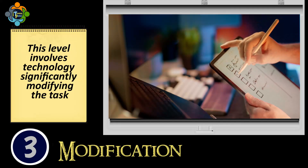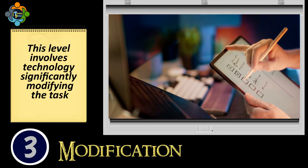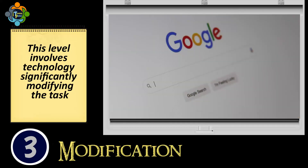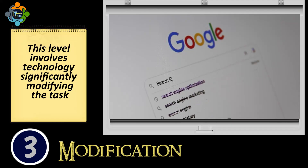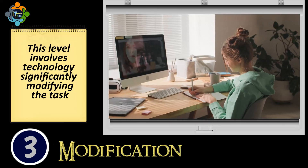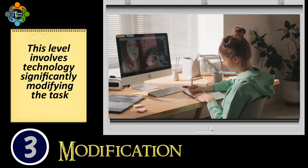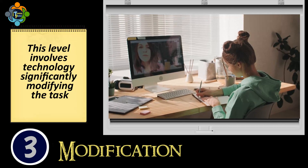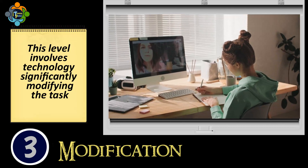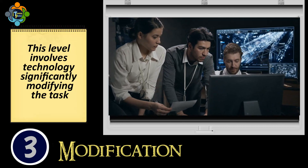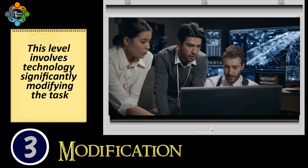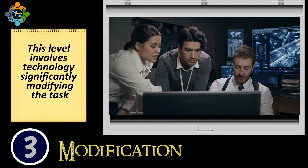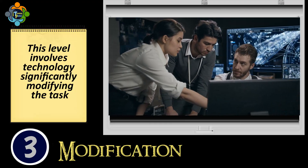Moving up, we find Modification. This level involves technology significantly modifying the task. This is where a learning management system like Google Classroom or Canvas can handle logistical aspects like tracking grades and posting assignments. Technology opens up new channels of communication benefiting all students, including those who might traditionally be marginalized. For example, Zoom's text chat allows students to write out questions, which can feel less intrusive than speaking up in a large group.